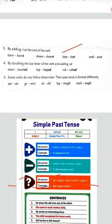Rule three: by adding T at the end of the verb. Verb के last में T लगाके। जैसे learn का learnt, dream का dreamt, sleep का slept, smell का smelt।